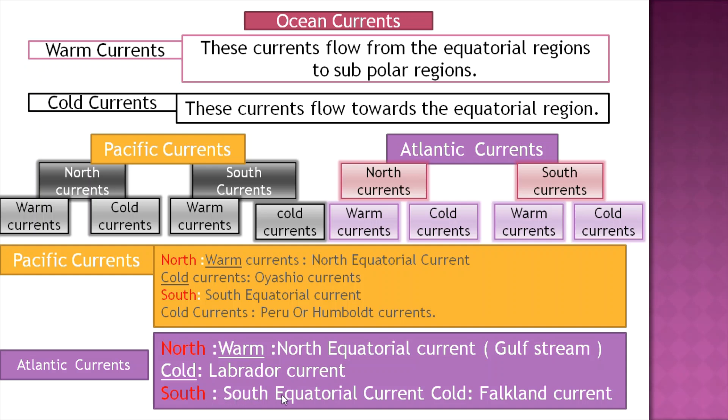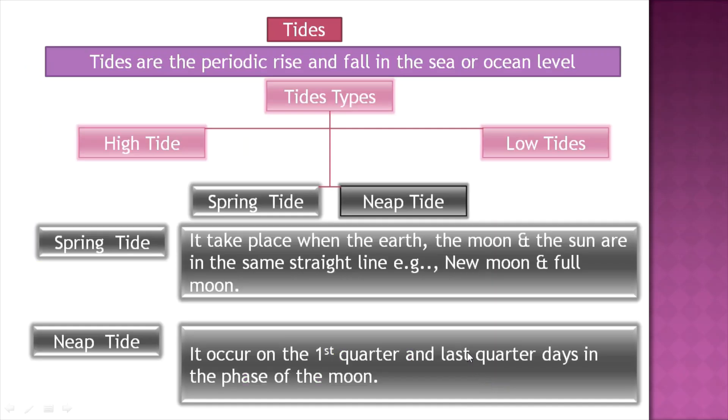What are tides? Tides are the periodic rise and fall in sea or ocean levels. Types include high tides and low tides. We also have spring tides and neap tides. Spring tides occur when the Earth, Moon, and Sun are in the same straight line, during new moon and full moon.